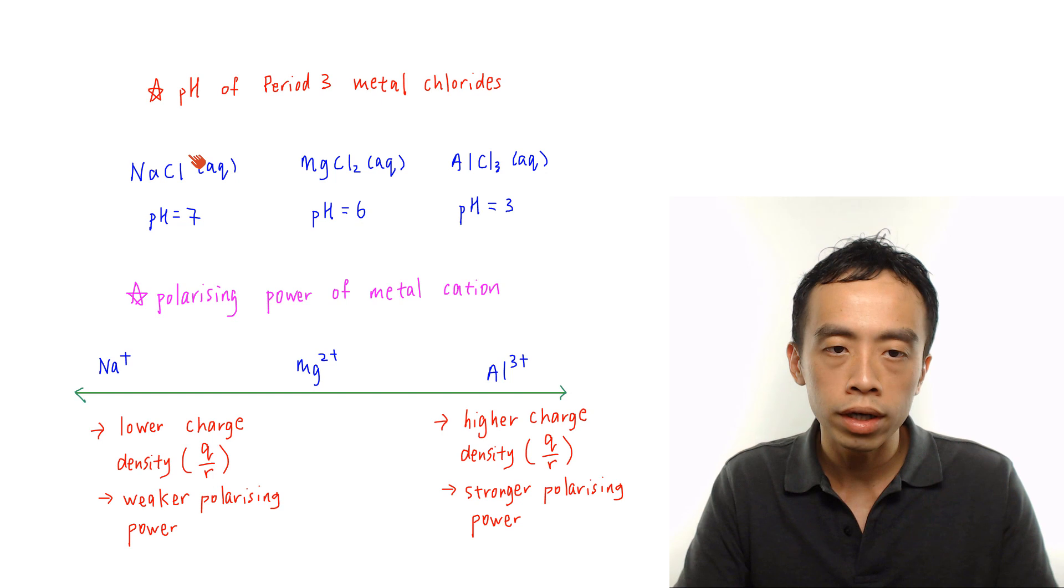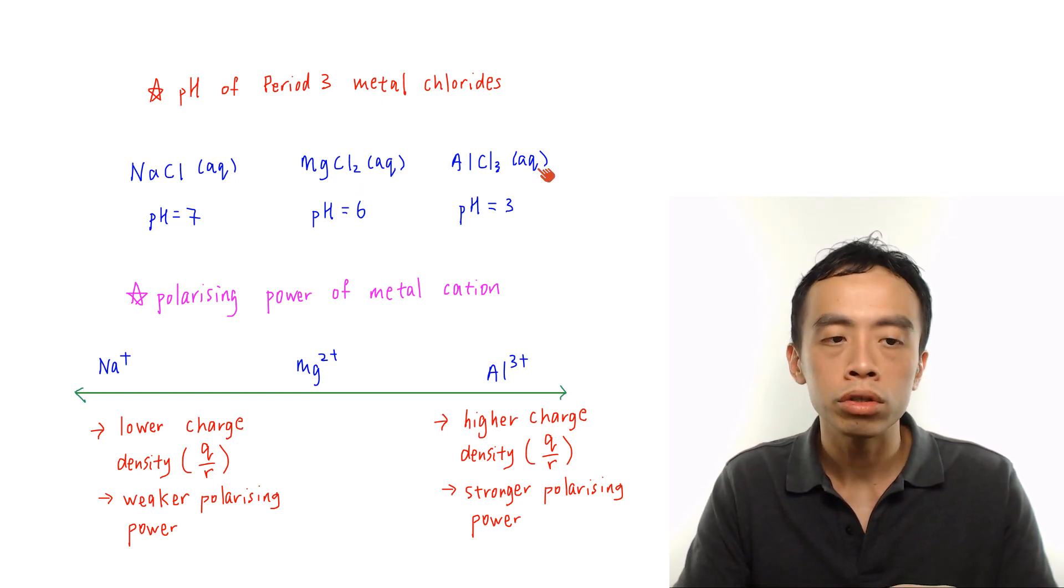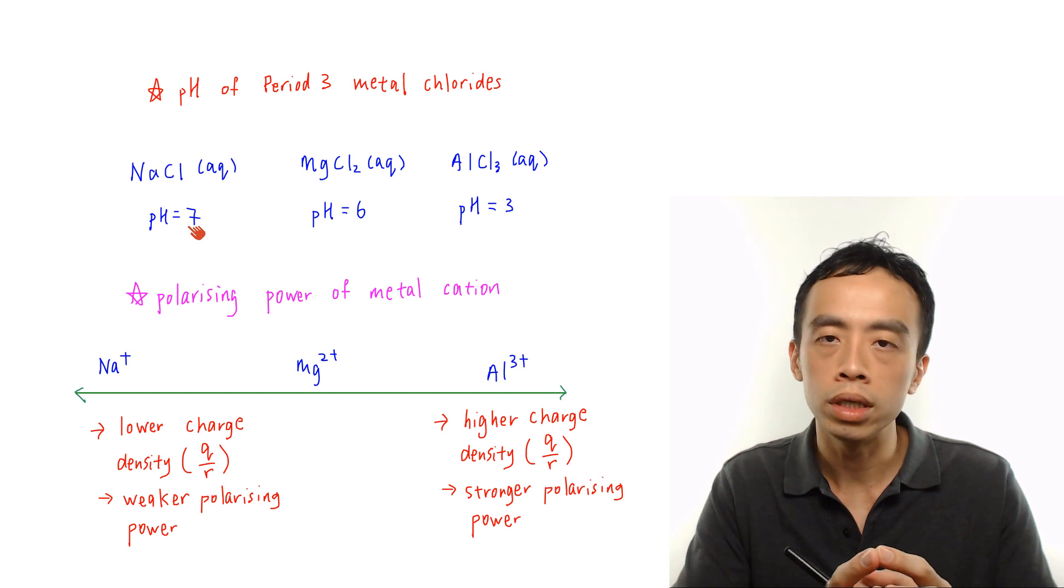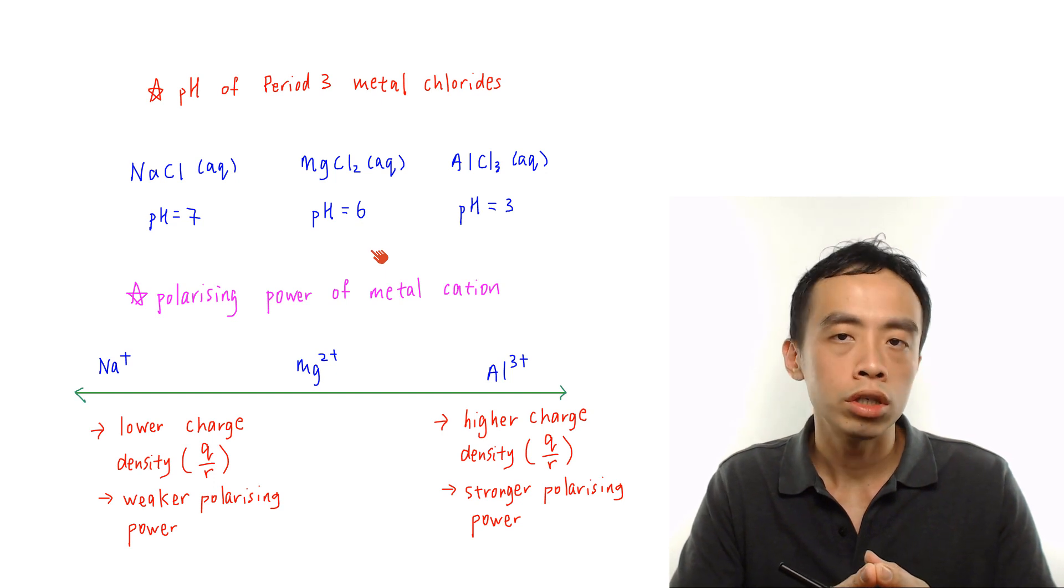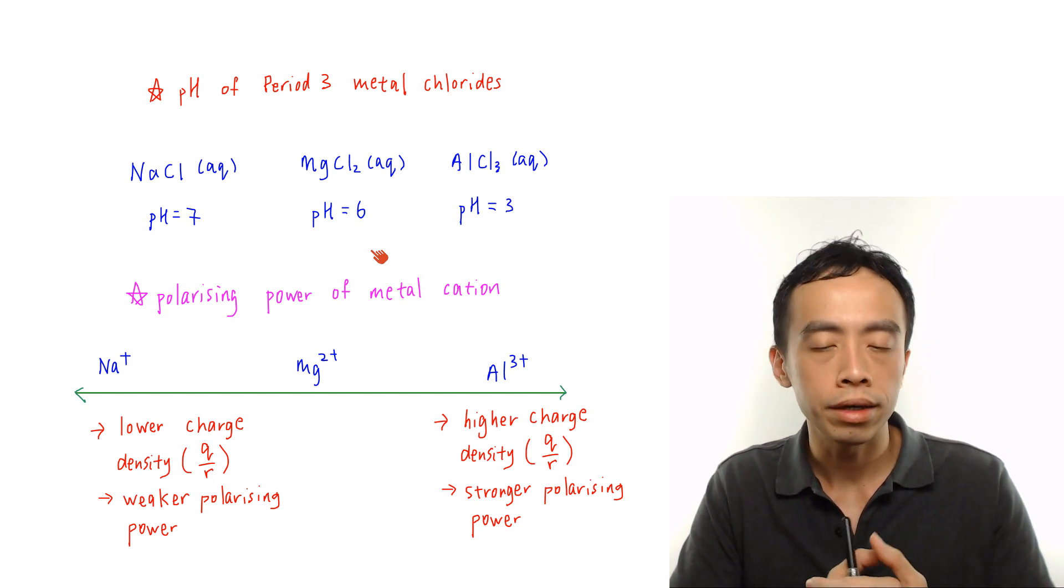If I look at sodium chloride, magnesium chloride and aluminum chloride, the pH of sodium chloride will be equal to 7, which is neutral. pH of magnesium chloride is pH equals to 6, slightly acidic.